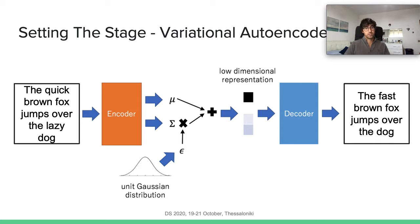That's why we exploit a variational autoencoder that takes as input a sentence and compresses it into a low-dimensional representation called latent space, by assuming a unit Gaussian distribution of this latent space. Then a decoder takes the low-dimensional representation and returns the original sentence or a good approximation of it.